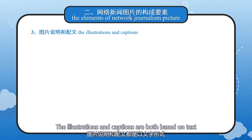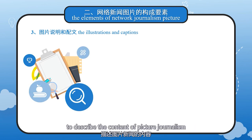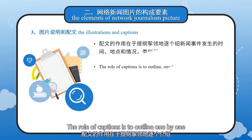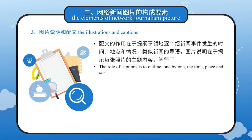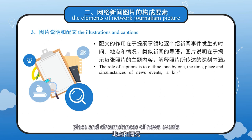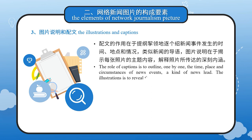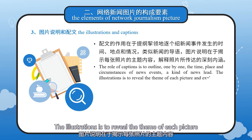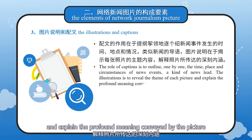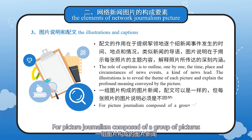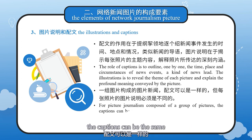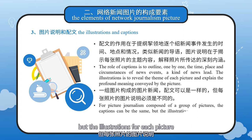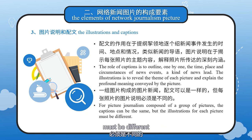The illustrations and captions are both text-based descriptions of picture journalism content, but there is a big difference between the two. The role of captions is to outline, one by one, the time, place, and circumstances of news events — a kind of news lead. The illustrations review the theme of each picture and explain the profound meaning conveyed by the picture. For picture journalism composed of a group of pictures, the captions can be the same, but the illustrations for each picture must be different.